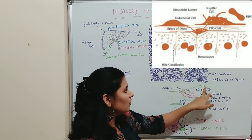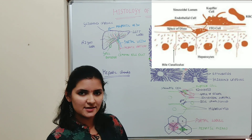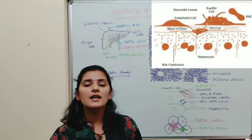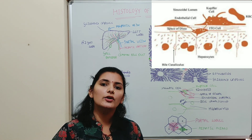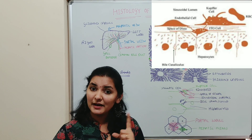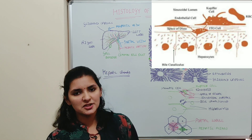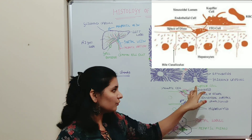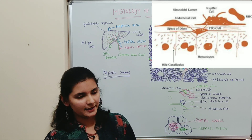The second type of cell present is the Kupffer cell. These Kupffer cells have pseudopodial processes and are phagocytic in nature. The main function of the Kupffer cell is to engulf foreign particles like pathogens, bacteria, or any other harmful chemicals present in the blood. This is how the liver detoxifies harmful substances present in the blood — it is done with the help of Kupffer cells.